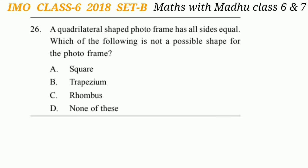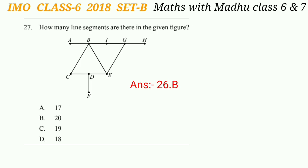Question 26: A quadrilateral-shaped photo frame has all sides equal. Which of the following is not a possible shape for the photo frame? Since all sides must be equal, the answer is trapezium, as the sides of a trapezium are not all equal.